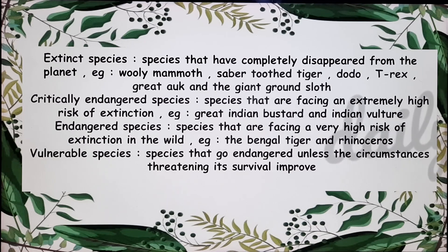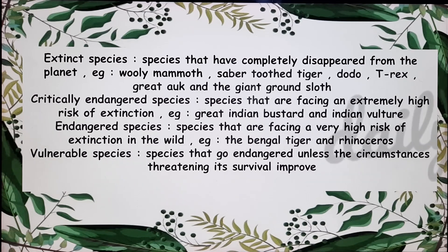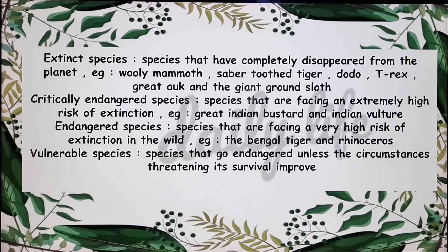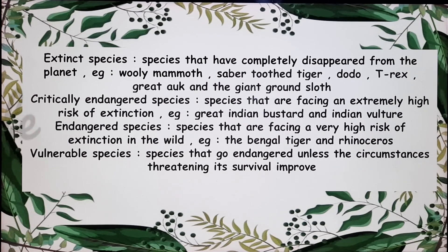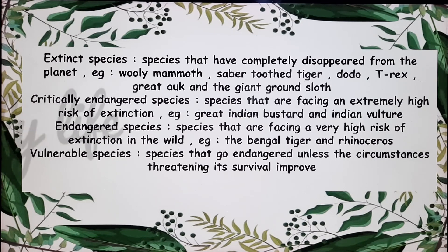You may have seen examples of extinct creatures in the movie Ice Age. Critically endangered species are species that are facing an extremely high risk of extinction. Examples include the great Indian bustard and Indian vulture. Critically endangered means these species are very rare — they cannot be found all around India; it's very rare to find them.